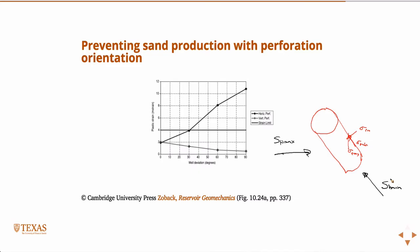You're already under a high compressive stress state there, you're already probably going to have breakouts, and you don't want to weaken the material anymore. So in that case you'd want to perforate at sh max. As you start to deviate the well it's not so clear and it changes. Given horizontal or vertical perforations, the strain limit in this case was 4% — so this shows equivalent plastic strain versus well deviation for horizontal and vertical perforations.